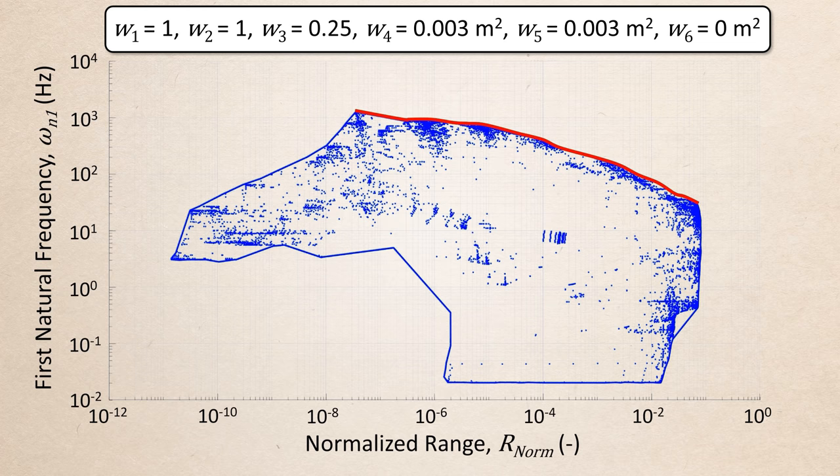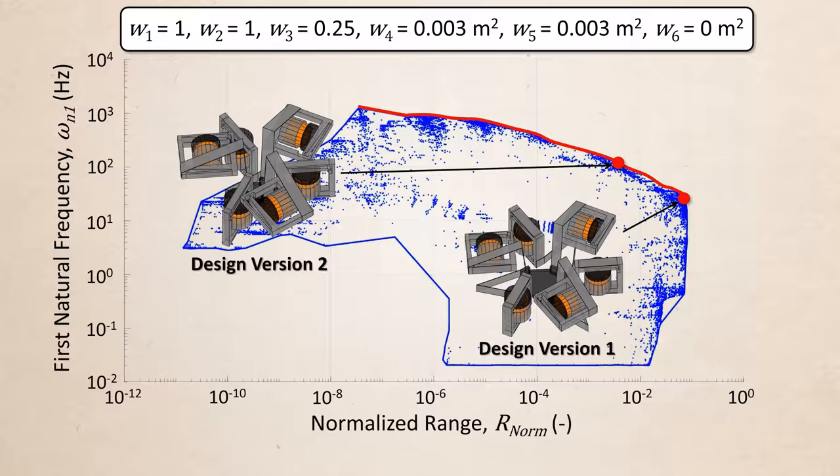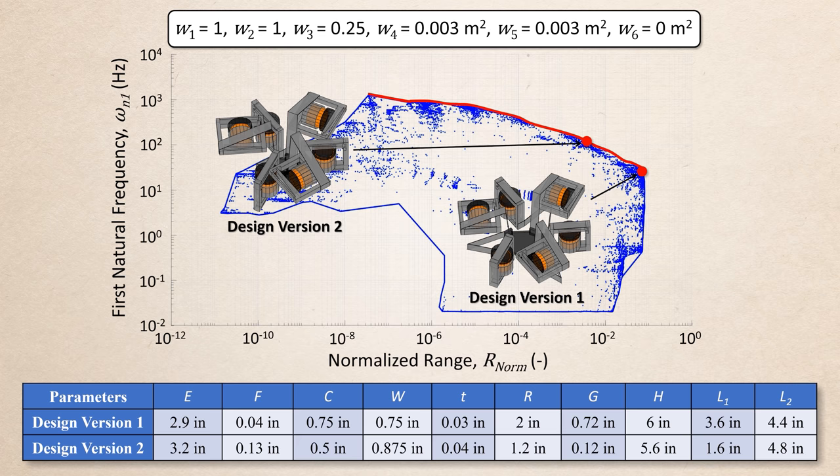Note that the red-colored portion of the plot's boundary represents all the optimal versions of the design which achieved the largest speed and range combinations possible. Two versions of the hex blade positioner design were selected from the optimal red portion of the performance capability plot. One of the optimal designs, called design version 1, achieves a lower speed over a larger range while the other design, called design version 2, achieves a higher speed over a smaller range.